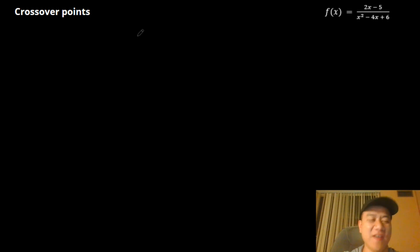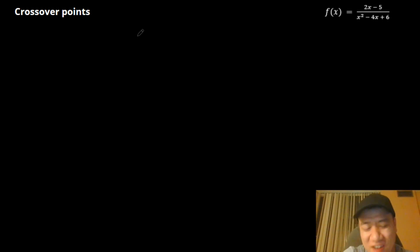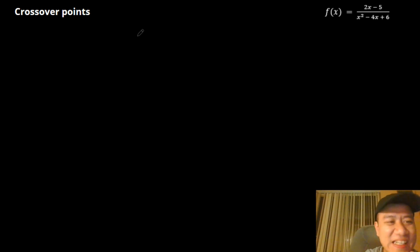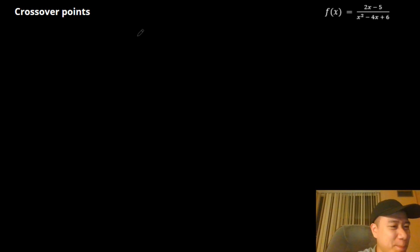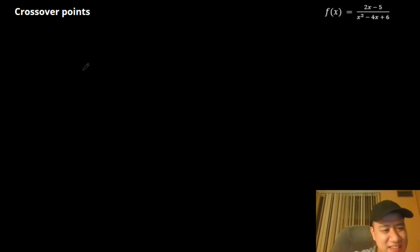So, crossover points — what is that? Basically, for grade 11 and grade 12 you've been told your whole life that functions cannot cross asymptotes. That is not entirely true. It is true for vertical asymptotes, but functions can actually cross horizontal and oblique asymptotes.